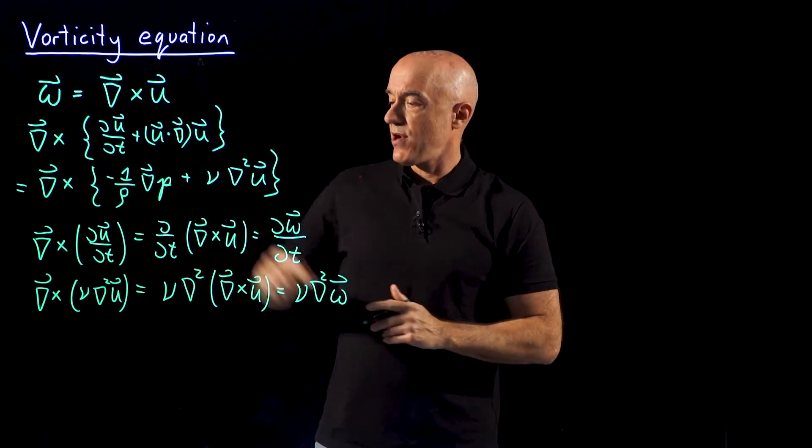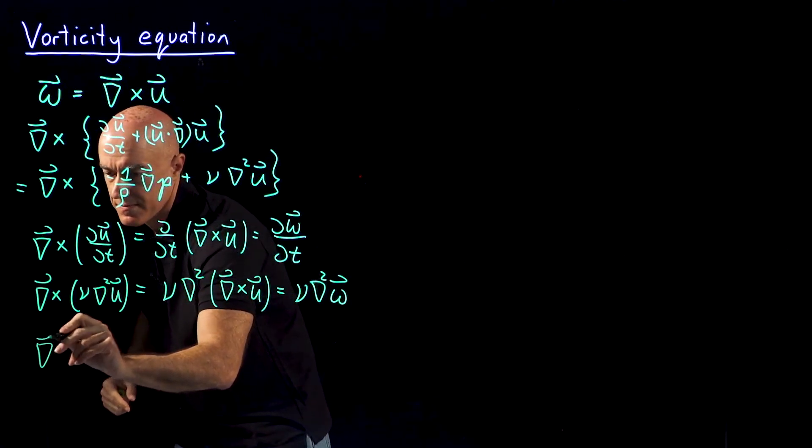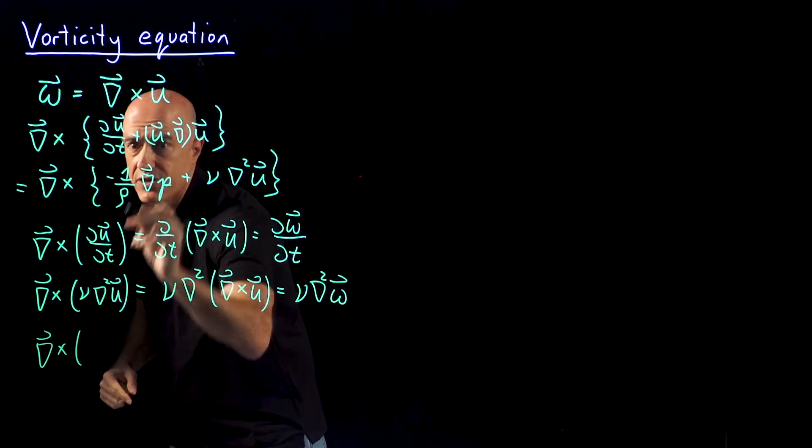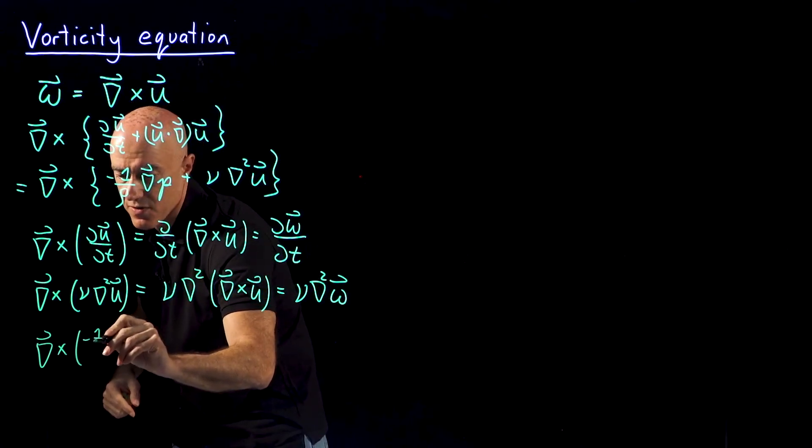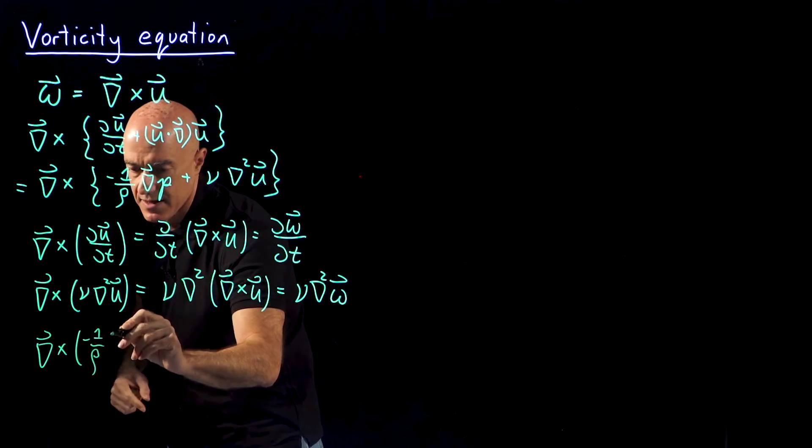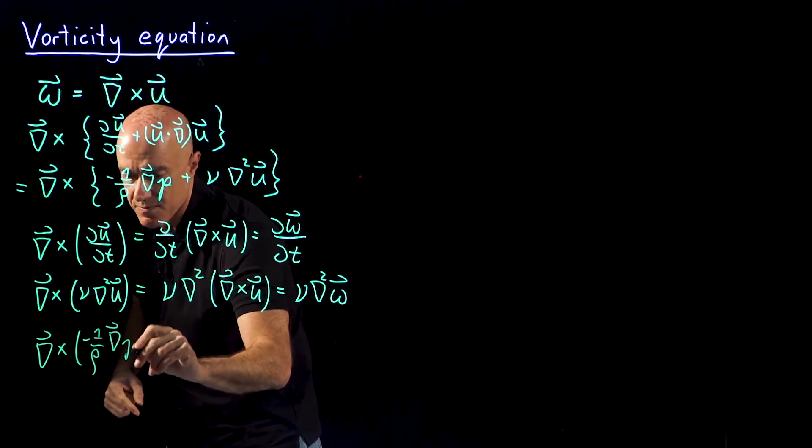Now the pressure term, the curl of the pressure term minus 1 over the density, which is a constant, times the gradient of the pressure.